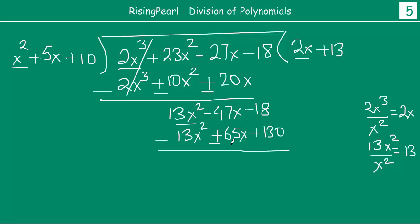Now we subtract. This term — 13x squared — cancels out. Then minus 47x minus 65x: working it out, that is minus 112x. And then the two minuses on the constant give us minus 18 minus 130, which is minus 148. So we get minus 112x minus 148.